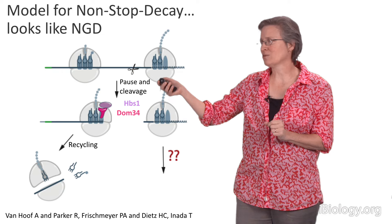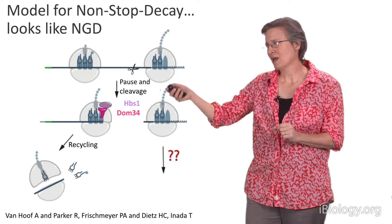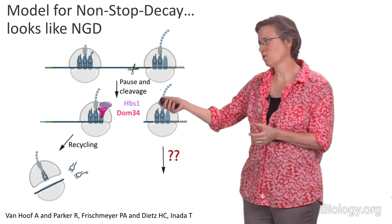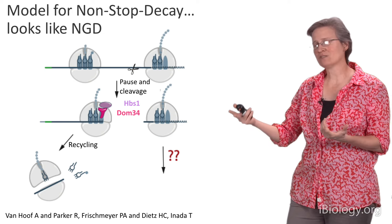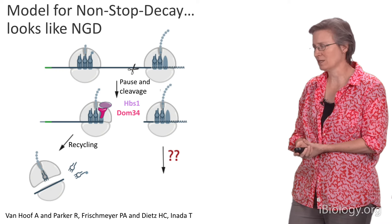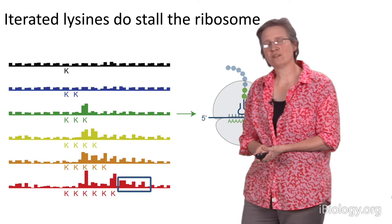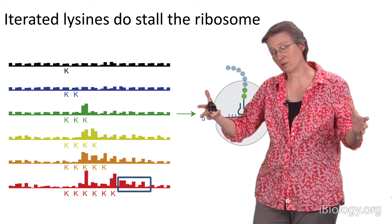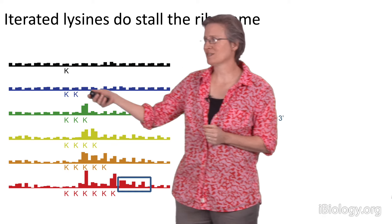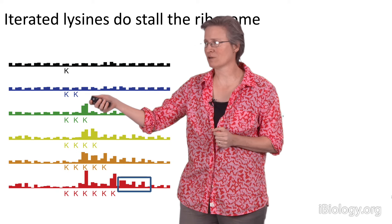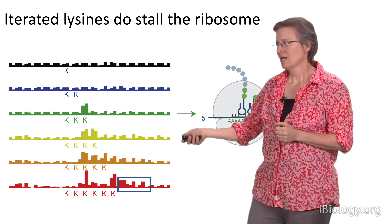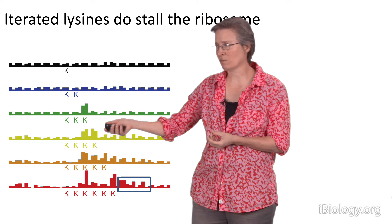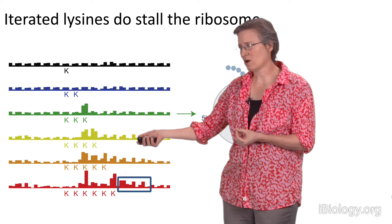The non-stop decay model is similar: instead of a stem loop, ribosomes run into a poly-A tail, endonucleolytic cleavage happens behind them, and trailing ribosomes are cleared by DOM34 and HBS1. We could explore polylysine effects using ribosome profiling by taking all ribosomes in the yeast transcriptome and doing metagene analyses aligning single lysines, two lysines, three, four, five in a row. Multiple lysines in a row cause the ribosome to stutter — bigger peaks, ribosomes stuck — and this propagates along the length of the polylysine track.